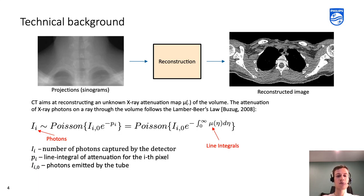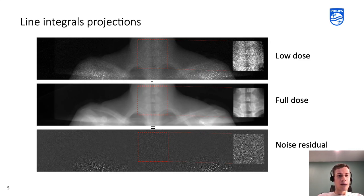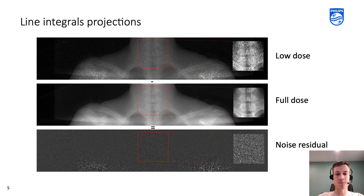I would like to explain a few technical details. A CT scanner captures projections and not the images — the reconstruction step converts projections into images. Traditionally, denoising is done in the image domain. However, projections are more promising because they contain redundant information, which is beneficial for denoising. In addition, some artifacts of images, such as streaks, are almost impossible to remove in the image domain and are better removable in projections.